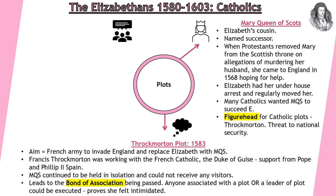This proves that Elizabeth feels intimidated. What's really significant is that because Mary Queen of Scots was not actively involved in the Throckmorton Plot, the Bonds of Association now means that in future plots against Elizabeth, Mary Queen of Scots — just by being named as a figurehead — could be held responsible for treason.